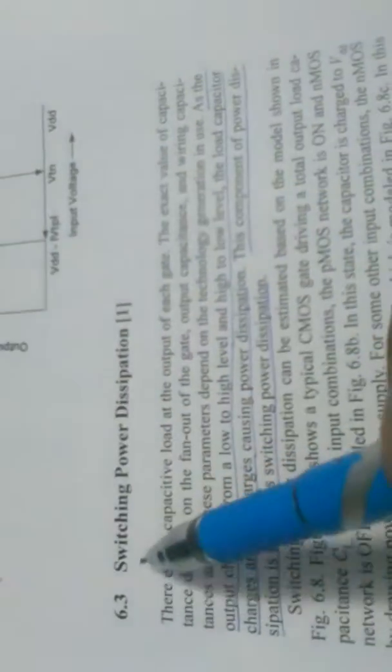Coming back to one more type of power dissipation: switching power dissipation. This occurs whenever there is a change from low to high level and high to low level — the load capacitor charges and discharges, causing power dissipation. This is known as switching power dissipation.